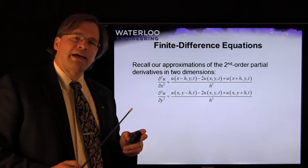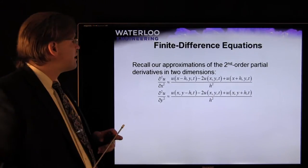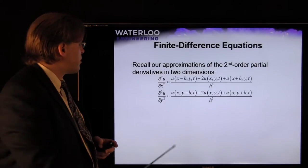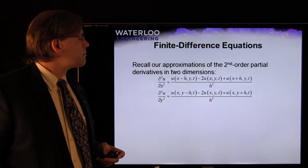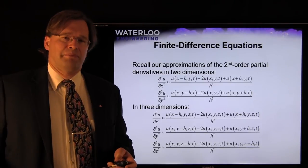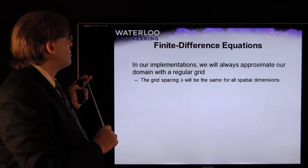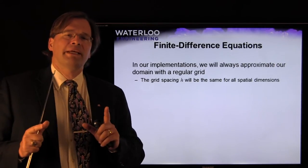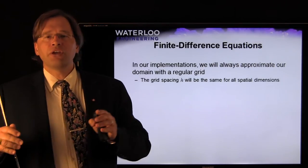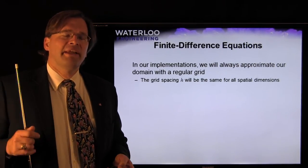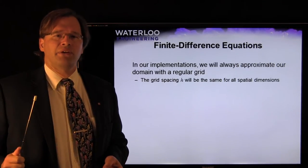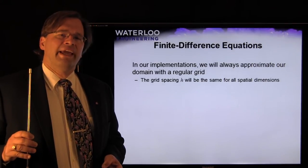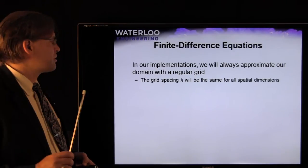Recall that in the previous lab we discussed approximating partial derivatives. If we take the partial with respect to x, we vary the first component; with respect to y, we vary the second component. In our implementation, we are always going to use a spatial grid that is rectangular and regular, so the spacing will always be h in each of the spatial dimensions. You could use different h's in different dimensions, but we will simplify by having a uniform grid. In reality, if you want very good solutions, you go to finite elements — but we'll discuss that at the very end.